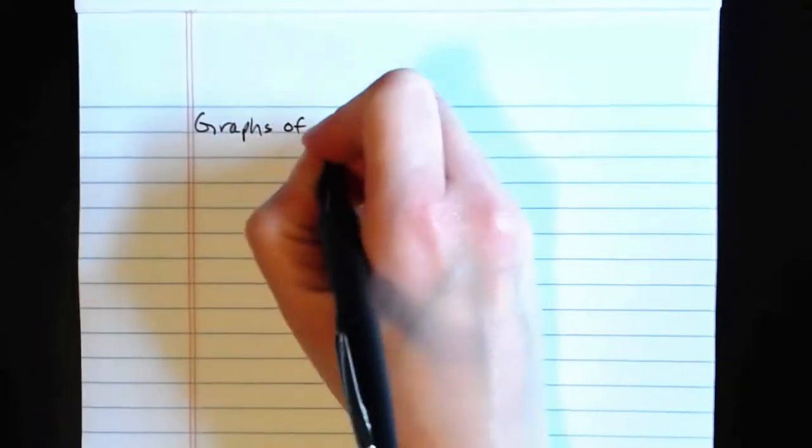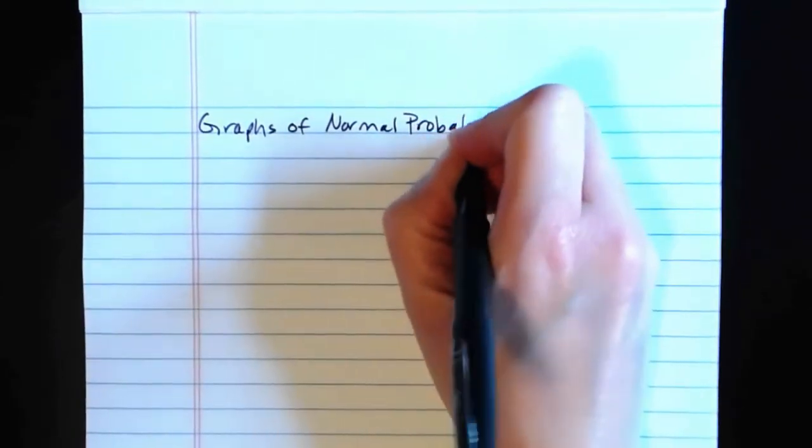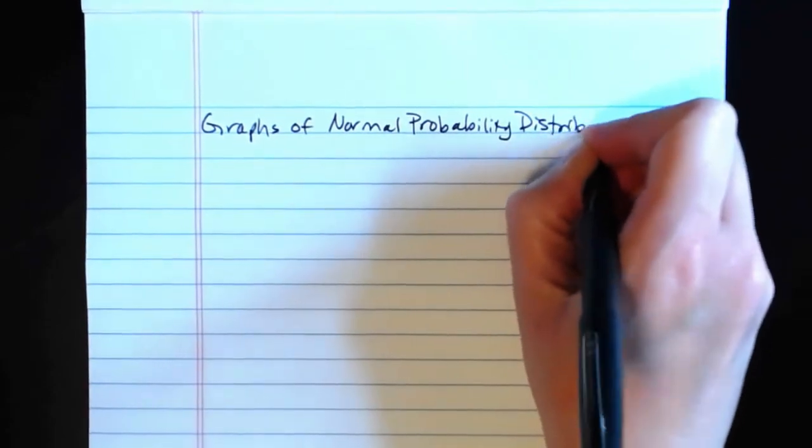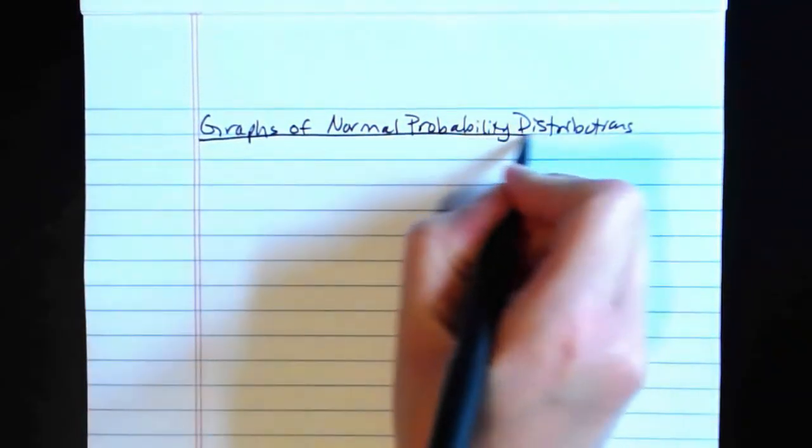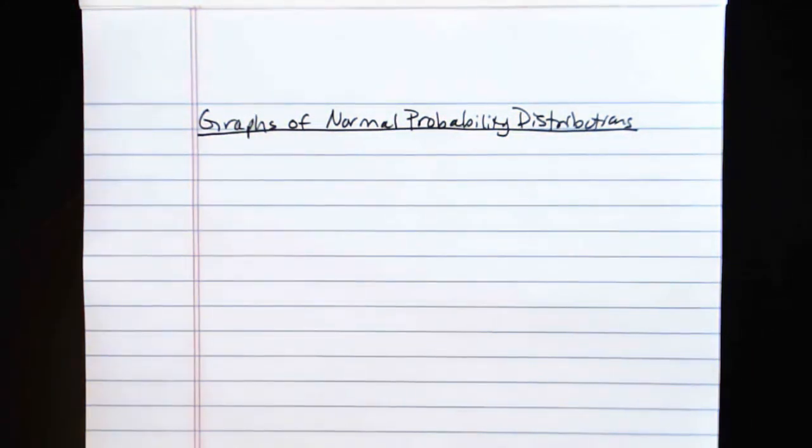In this video, we're going to be taking a look at graphs of normal probability distributions. The first thing I'd like to do is to compare and contrast the binomial probability distribution and the normal probability distribution.